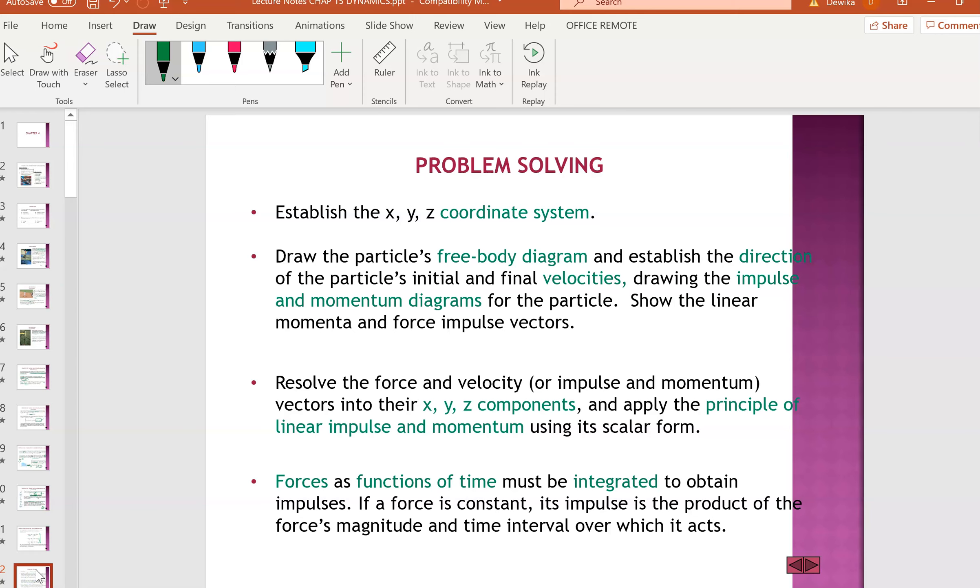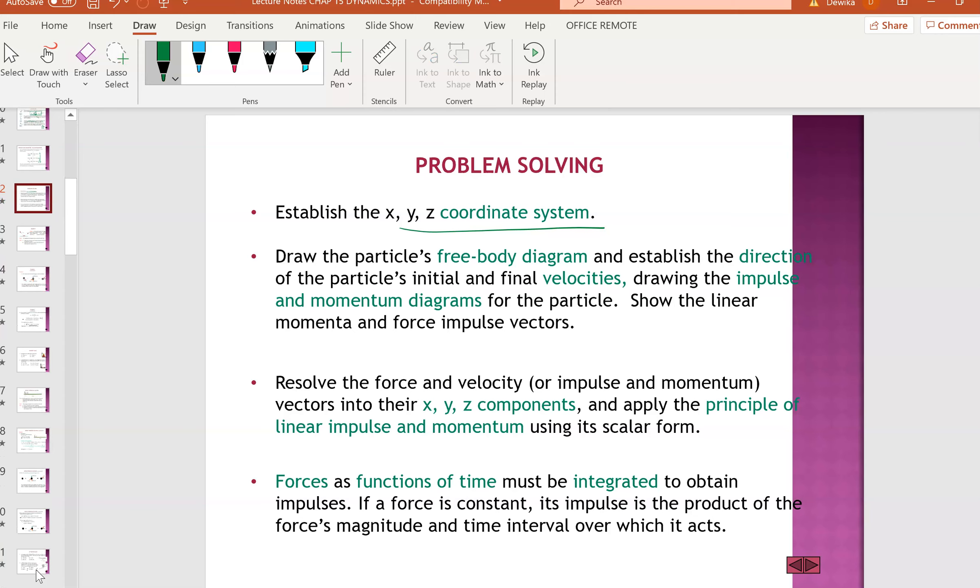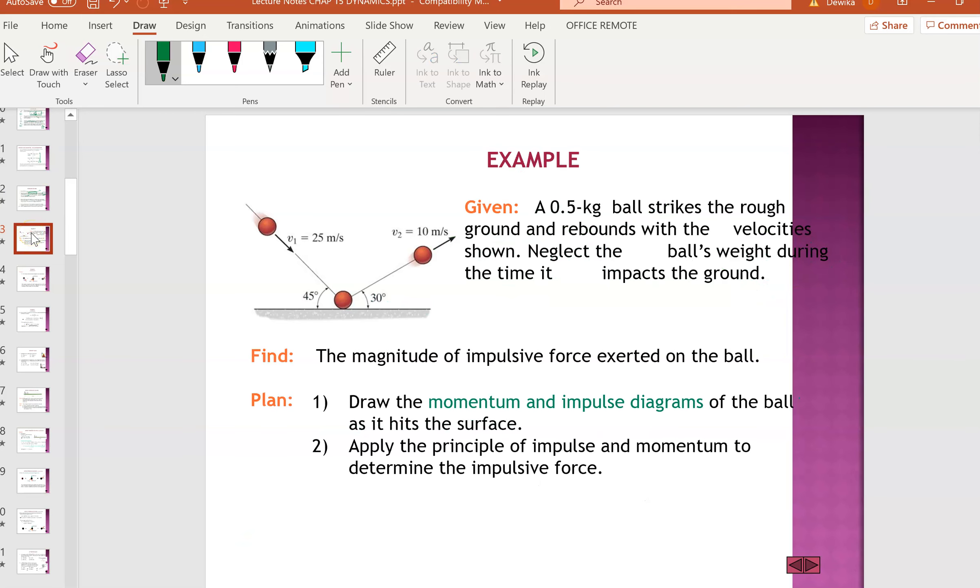Problem solving - the most important thing is to define the coordinate system, because we have x-axis to be solved in x and y-axis to be solved in y. We don't mix them up. First thing is to draw the free body diagram - I've been telling this from previous chapters many times. Free body diagrams are important. You need to establish the direction of the object and may also need to draw the impulse and momentum diagram. Then you resolve the forces and velocity based on the coordinate system, put them in the formula, and solve the question. I'm going to show you an example.